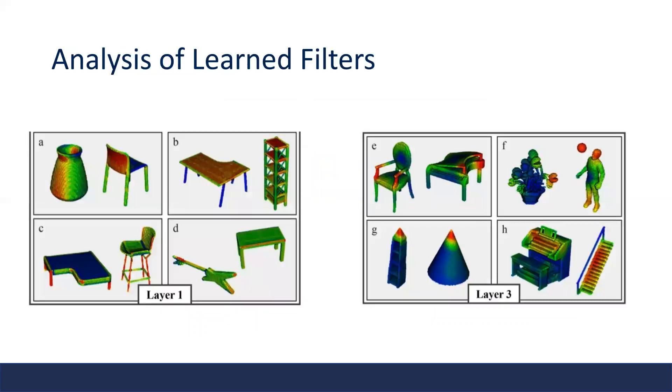Here we show some analysis of the proposed method. First is the visualization of the learned filters. At the left side, we see the learned filters at the first layer, which correspond to simple shaped concepts like plane, line, or corners. At the right side, we see the learned filters at the third layer, which captures more complex shapes like arrow-shaped corners, balls, sharp corners, or stairs.